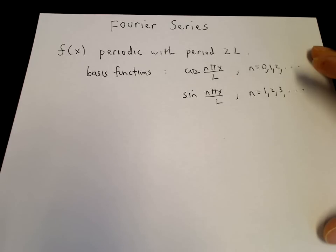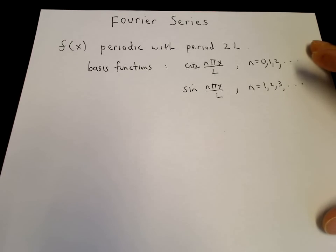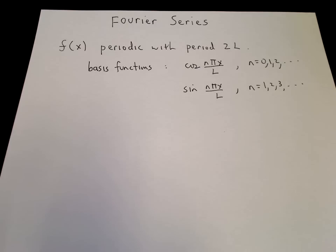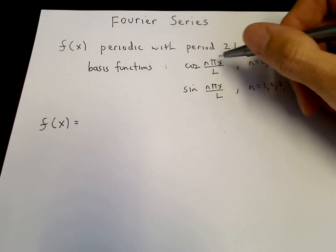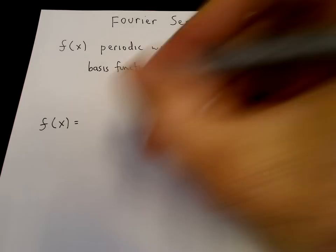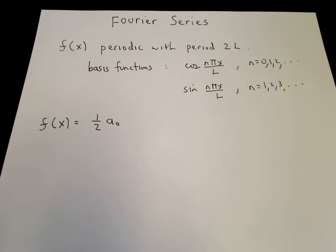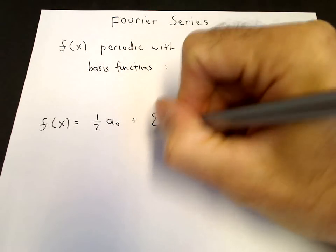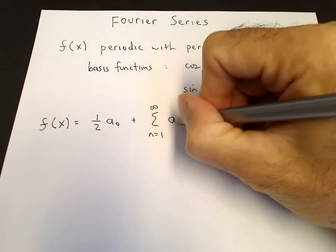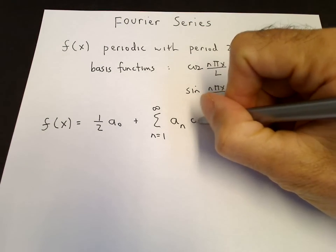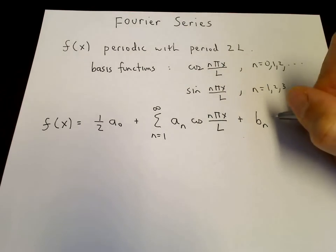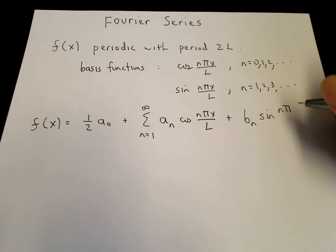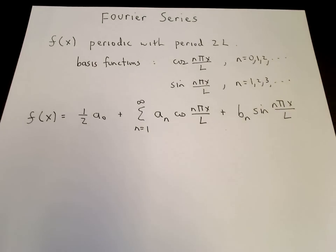When x goes to x plus 2l, the argument is incremented by 2 pi, and cosine and sine are periodic with period 2 pi. With those basis functions we do our Fourier series expansion. We write f(x) equals one-half a_0 plus a sum from n equals 1 to infinity of a_n cosine(n pi x / l) plus b_n sine(n pi x / l). That's our Fourier series.